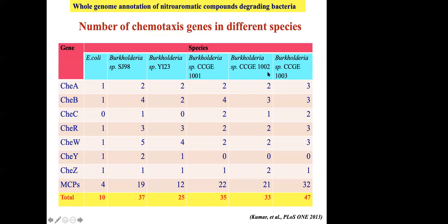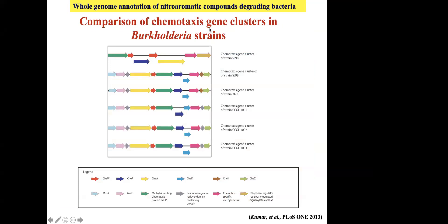A wet lab scientist told me that this Burkholderia also has the chemotaxis property — in a petri plate, if you put the bacterial culture a few centimeters away from nitroaromatic compounds, the bacteria move toward those chemicals to degrade them. We found 37 chemotaxis genes in this Burkholderia, compared to 25 in Yi23 and only 10 in E. coli. This suggests this Burkholderia has evolved to degrade nitroaromatic compounds using more chemotaxis genes.